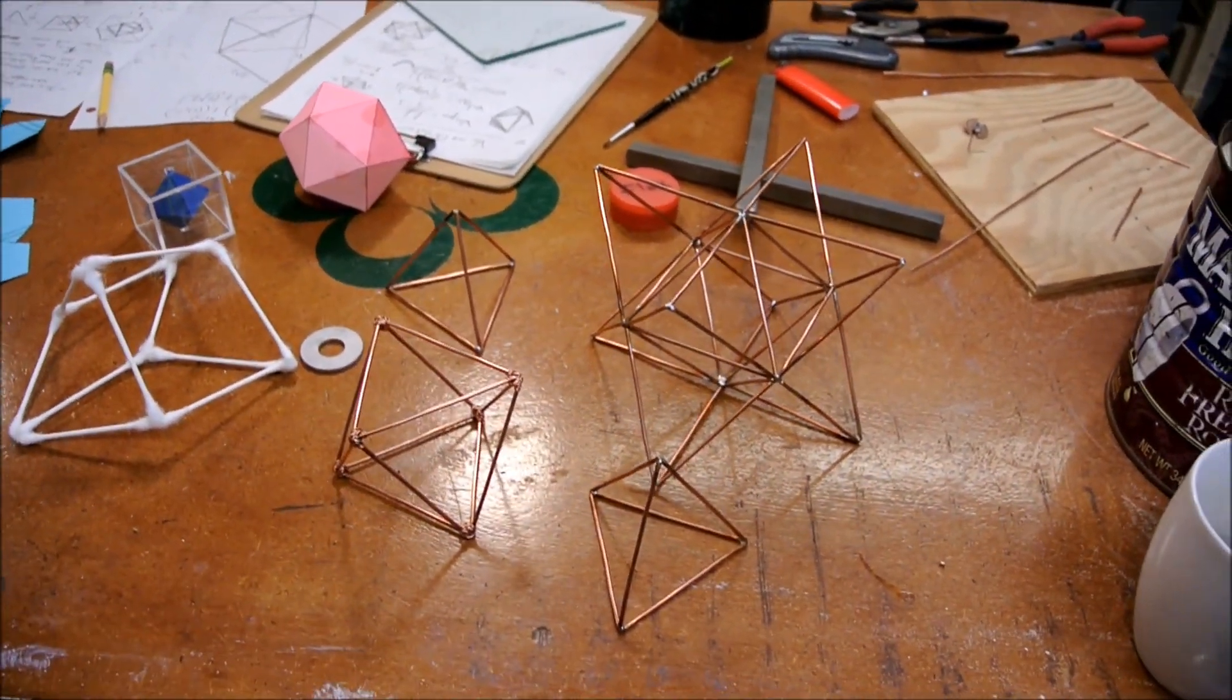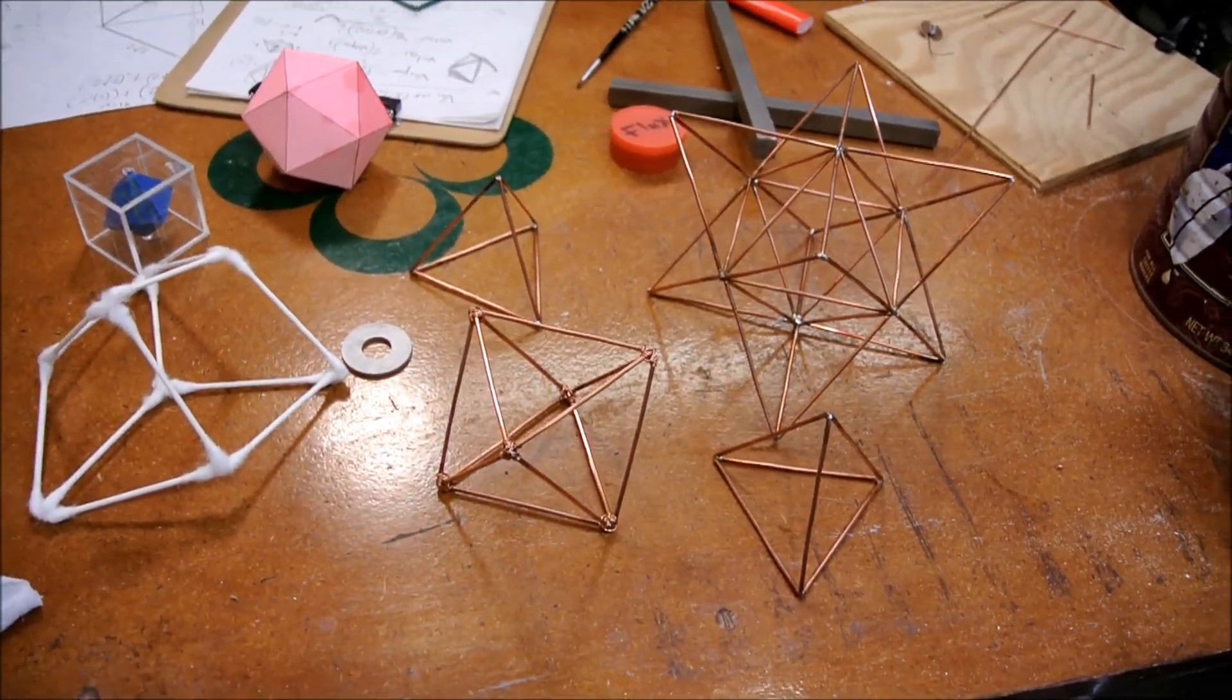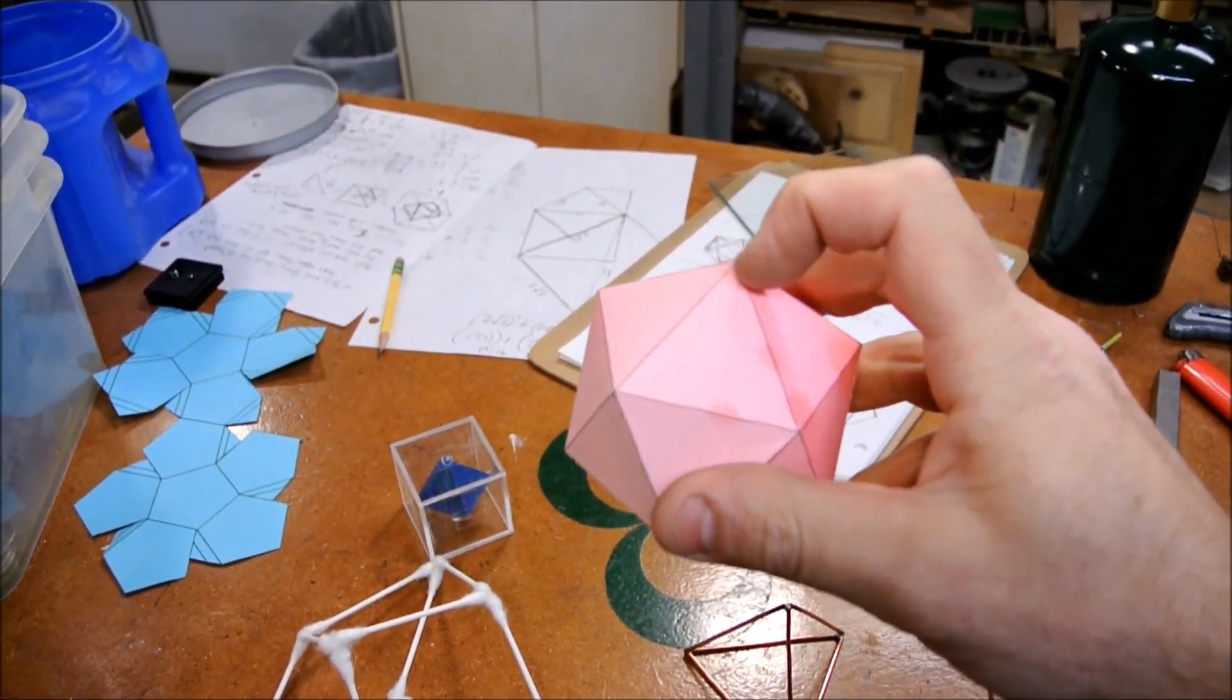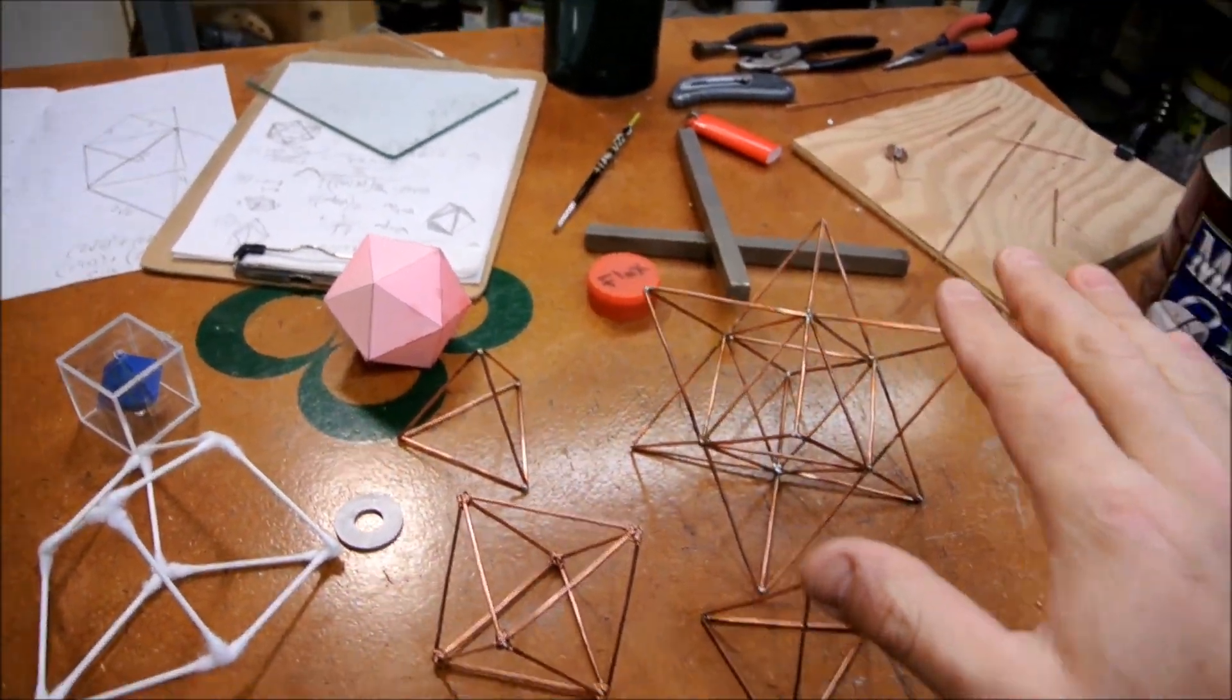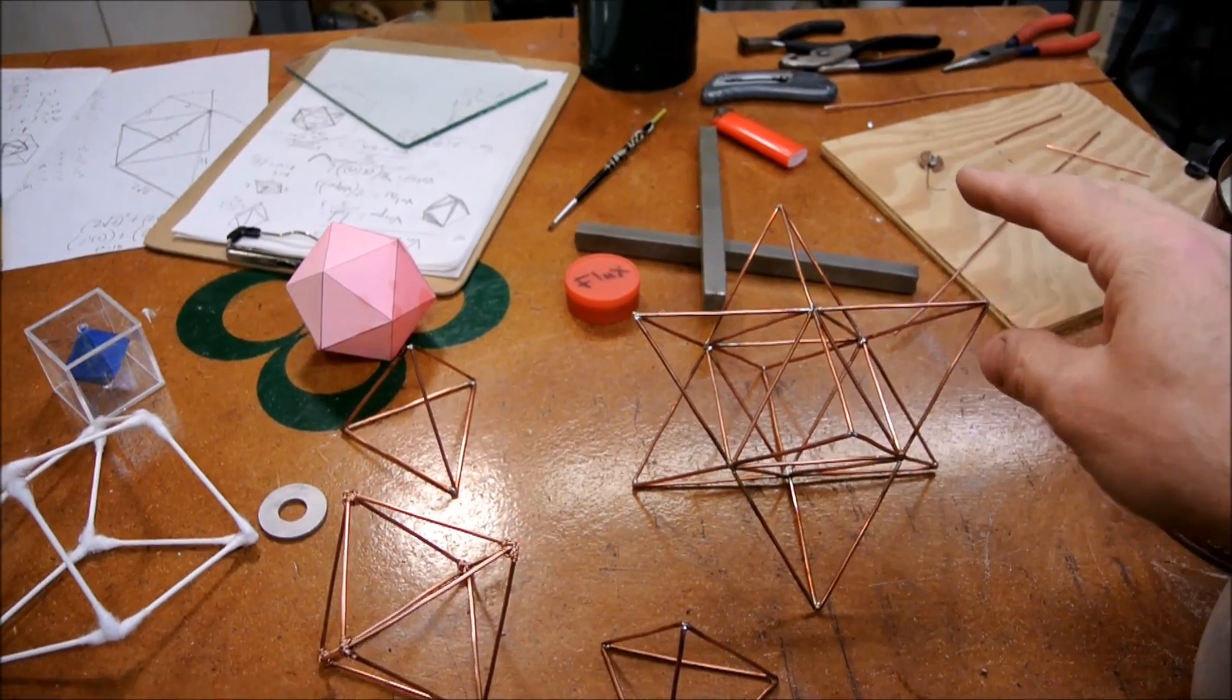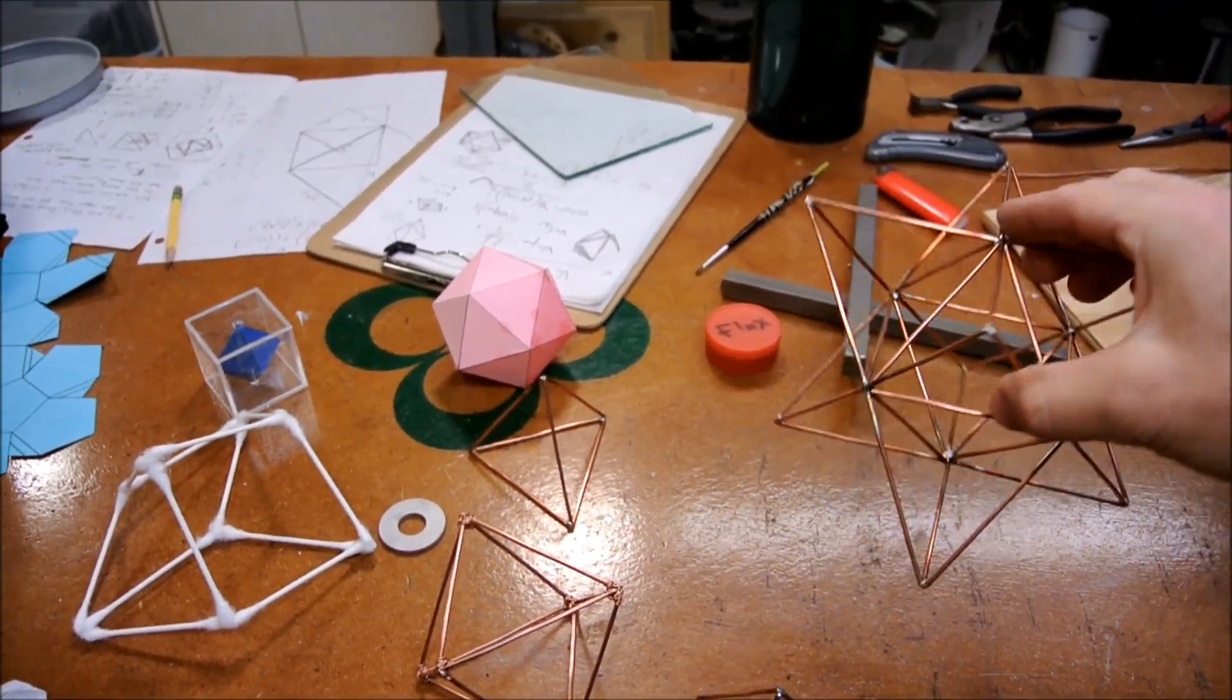Now if you remember the video I made about the truncated icosahedron, that would be one of these. And truncated means that you sand the tips off in simple terms. Also there's a precise mathematical definition for this as well, but let's just stick to the simple stuff.